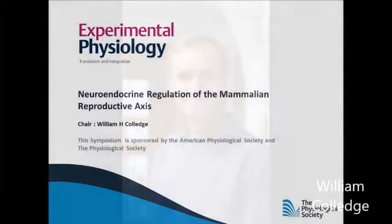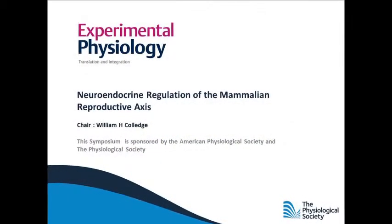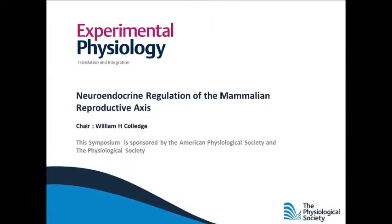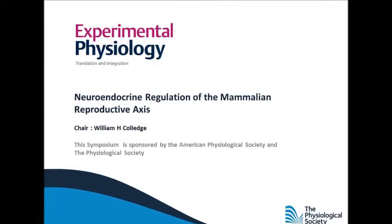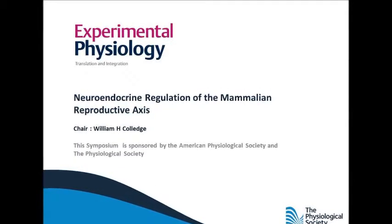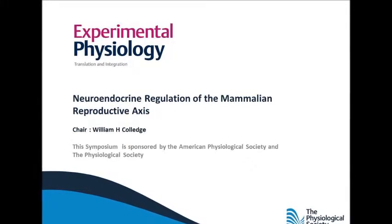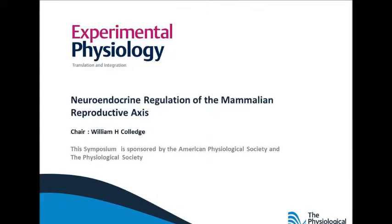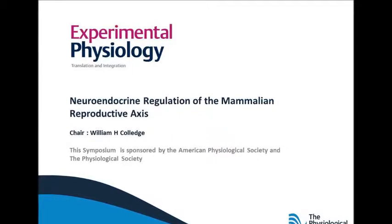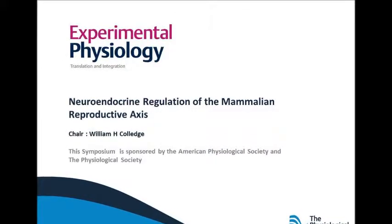In mammals, the capacity for reproduction involves coordinated communication between the hypothalamus, the anterior pituitary and the gonads, the so-called HPG axis. It has been recognised since the 1970s that a small population of gonadotrophin-releasing hormone neurons in the hypothalamus — the GnRH neurons — are critical for regulation of the mammalian reproductive axes. Puberty involves functional activation of these neurons, resulting in pulsatile GnRH release, that stimulates gonadotrophic hormone production from the anterior pituitary and subsequent gonadal maturation.